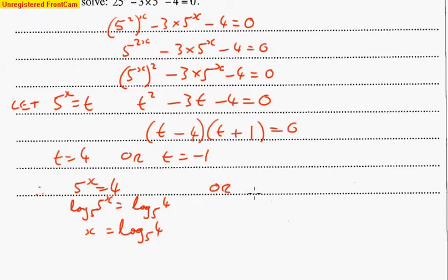Or, we get—now we're using the t equals minus 1—we get 5^x = -1, and that has no solutions because whatever power you put 5 to, it can't possibly ever be a negative number.